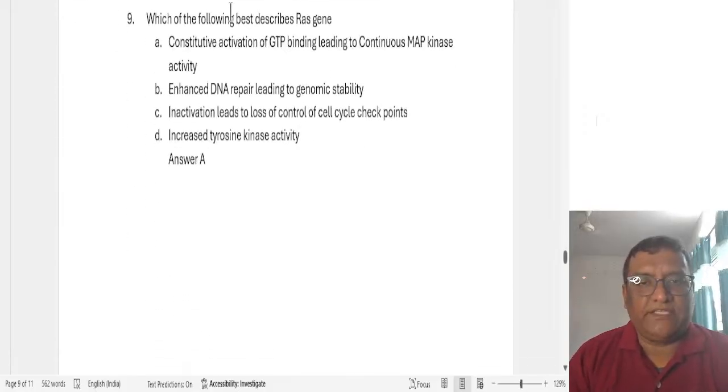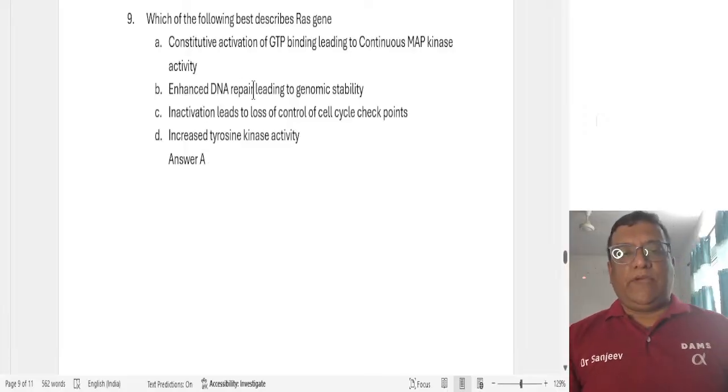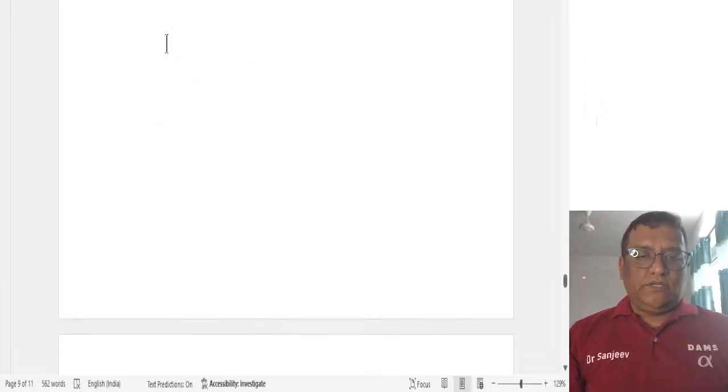Next, we had one more question. Which of the following best describes RAS gene? So RAS, we all know it is a proto-oncogene. It is a signal transduction protein. RAS gene, what does it do? Constitutive activation of GTP binding leads to continuous MAP kinase activity. As DNA repair leading to genomic stability? No. DNA repair is not by RAS. RAS is a proto-oncogene. DNA repair genes are your HNPCC, that is MSH, MLH genes, BRCA genes, etc. Inactivation leads to loss of control of cell cycle checkpoints? No. Inactivation leading to loss of control of cell cycle checkpoints will be RB inactivation or P53 inactivation. That is tumor suppressor gene. Increased tyrosine kinase activity, that is also false. So the correct answer is option A here.